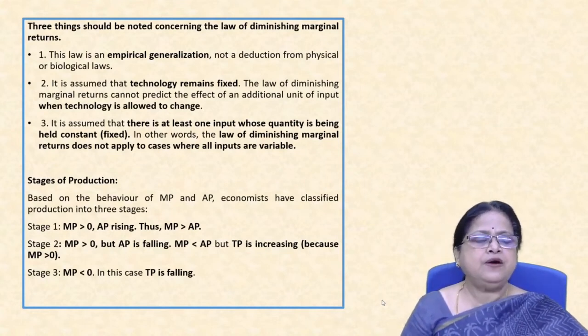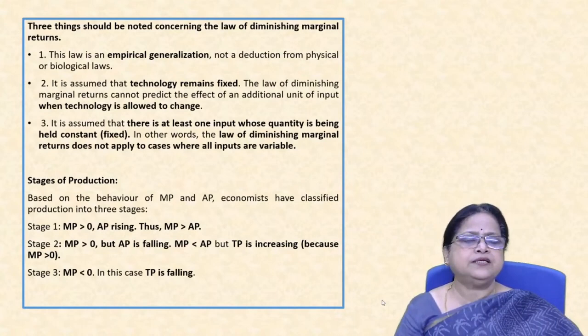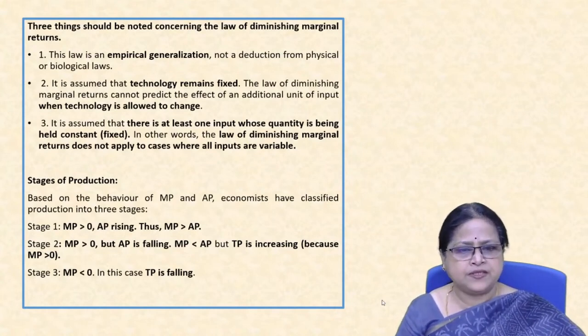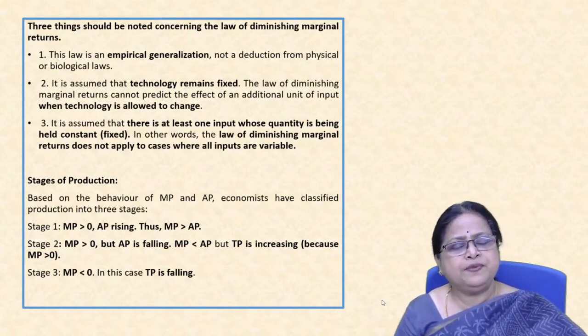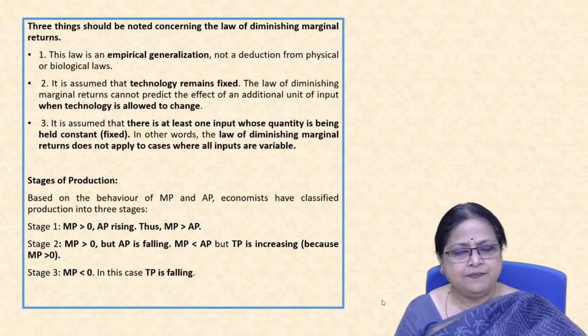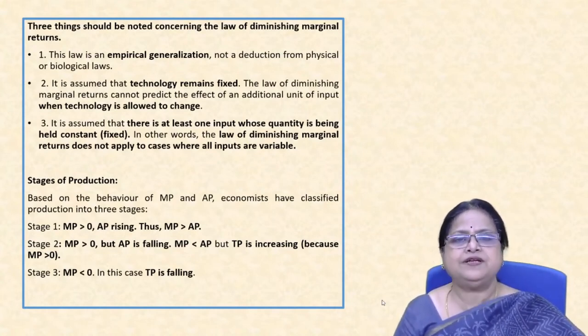Based on the behavior of marginal product and average product, economists classify production into three stages.